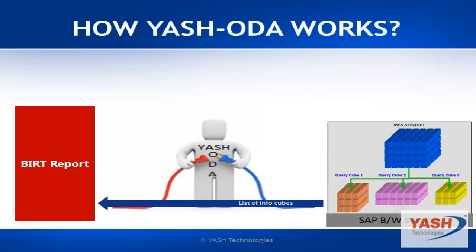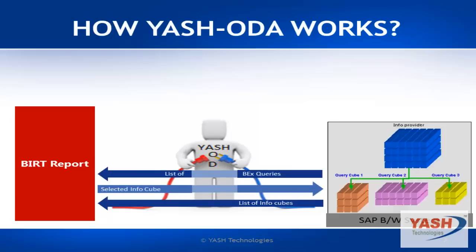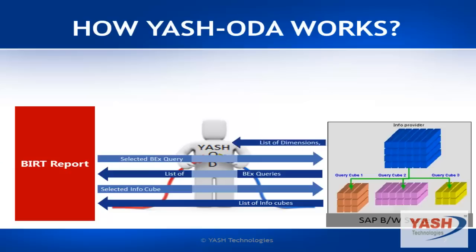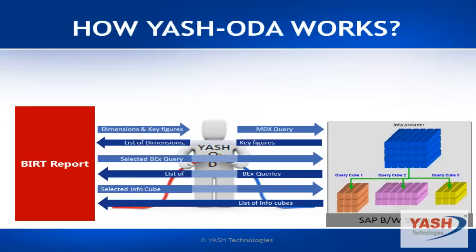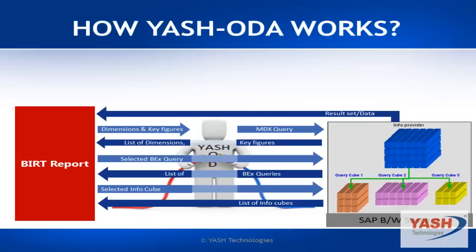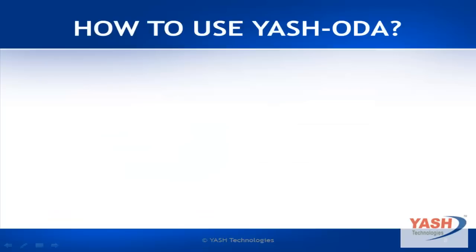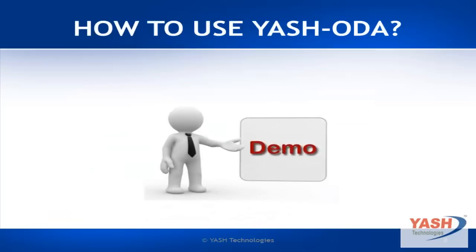After connecting, Yush ODA exposes all the info providers and associated BEX queries available in the SAP BW system. The required BEX query is selected from the list, which is then passed to get the list of dimensions and key figures. The user selects the dimensions and key figures to be displayed in the rows and columns as required. Yush ODA constructs the MDX query based on the selection and passes the query to the SAP BW system. Data is retrieved and then passed to the Actuate BW report. Yush ODA provides a step-by-step wizard to create a data source to connect to the SAP BW system, and also a wizard to create a data set to access info providers by queries, dimensions, key figures, etc. It creates an MDX query based on selections made.